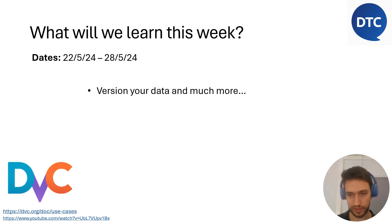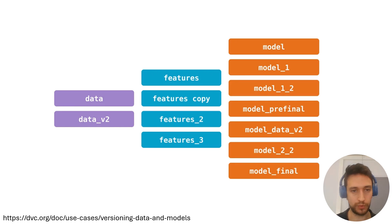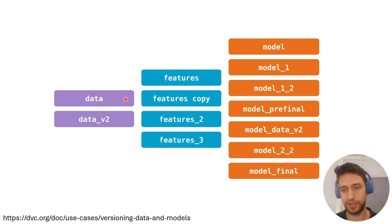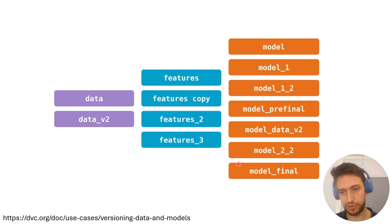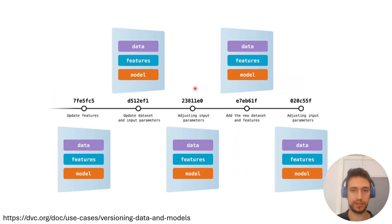DVC stands for Data Version Control. It is an open source tool that can actually do much more than just version your data — hopefully by the end of the week you'll see that yourself. It often happens that in your repository or project you have an initial set of data, features, and a model, and later on you update them, resulting in a new set of features or even models. It's not easy to track that, so you have reproducibility problems — maybe you didn't save the old model or the data you trained it on. DVC helps you solve that with the same concept that Git does.